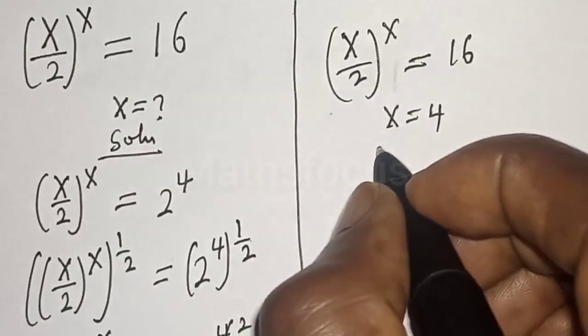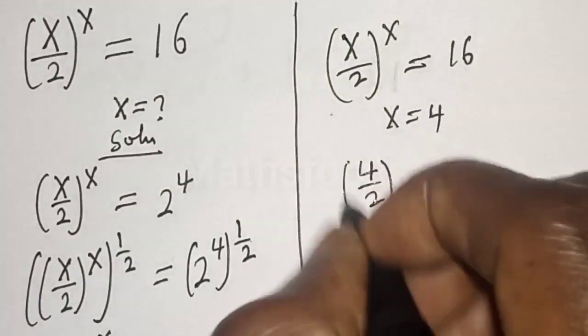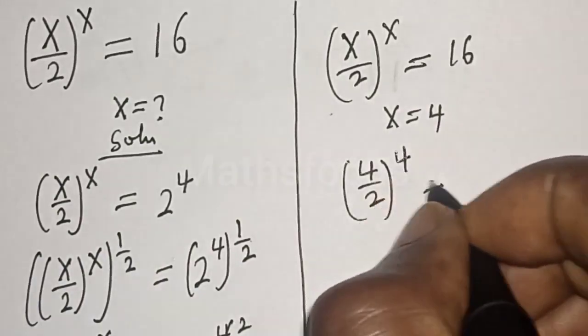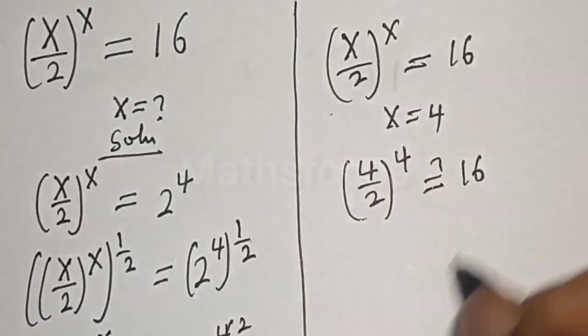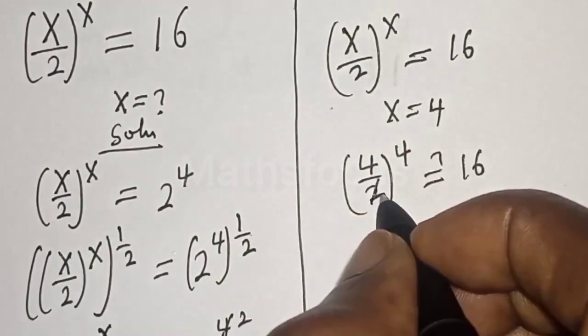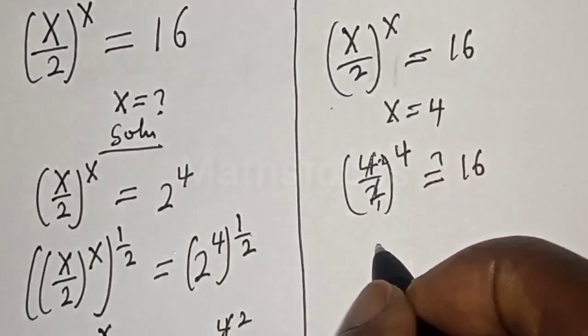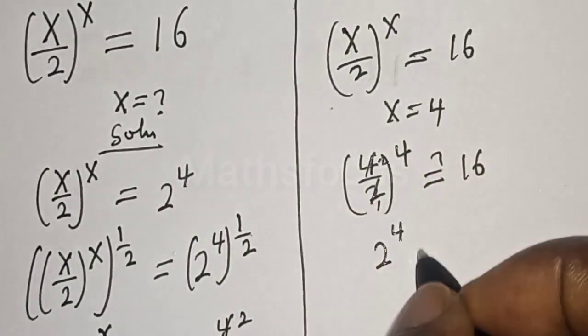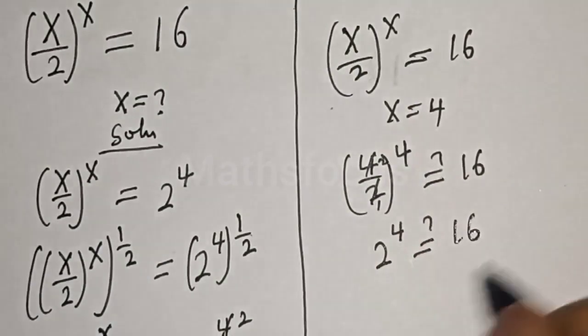Let's see. This is 4 over 2 to the power of 4 must equal 16. 2 here 1, 2 here 2. Here is 2 to the power of 4, must equal 16.